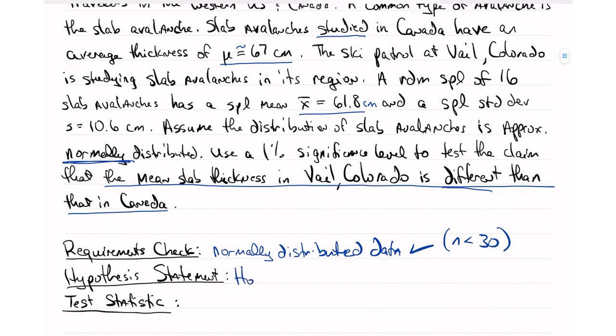We need a hypothesis statement. Remember that the null hypothesis, H naught, is mu equal to, and now we have to find what value of mu we want to compare, and they've said that is 67 centimeters. Versus, now we look at the claim to figure out how to express H1, our alternative hypothesis, and I've underlined the claim that the mean slab thickness in Vail, Colorado is different than. So mu not equal to 67 centimeters. So different than, not equal, not the same, those all mean not equal to.